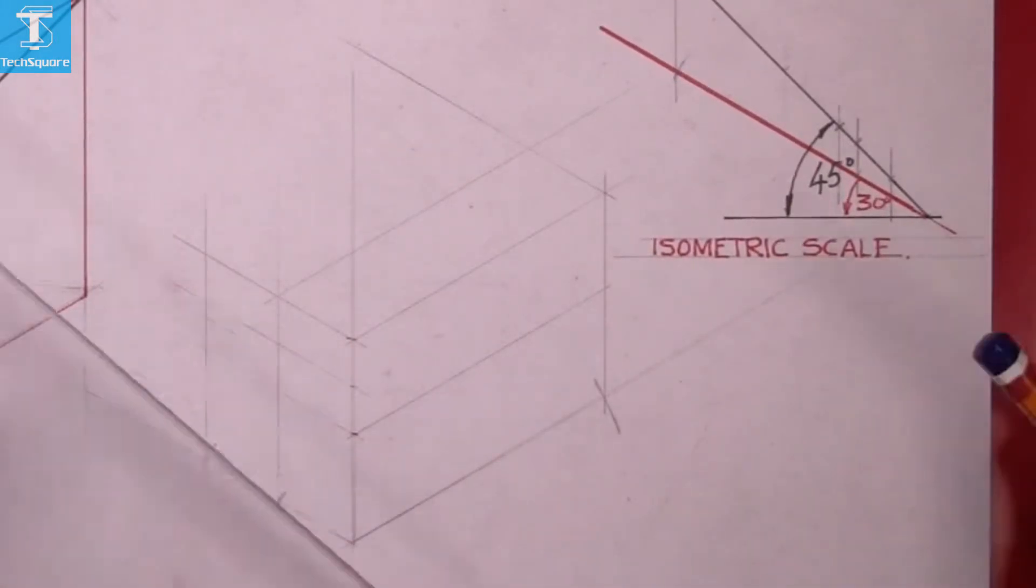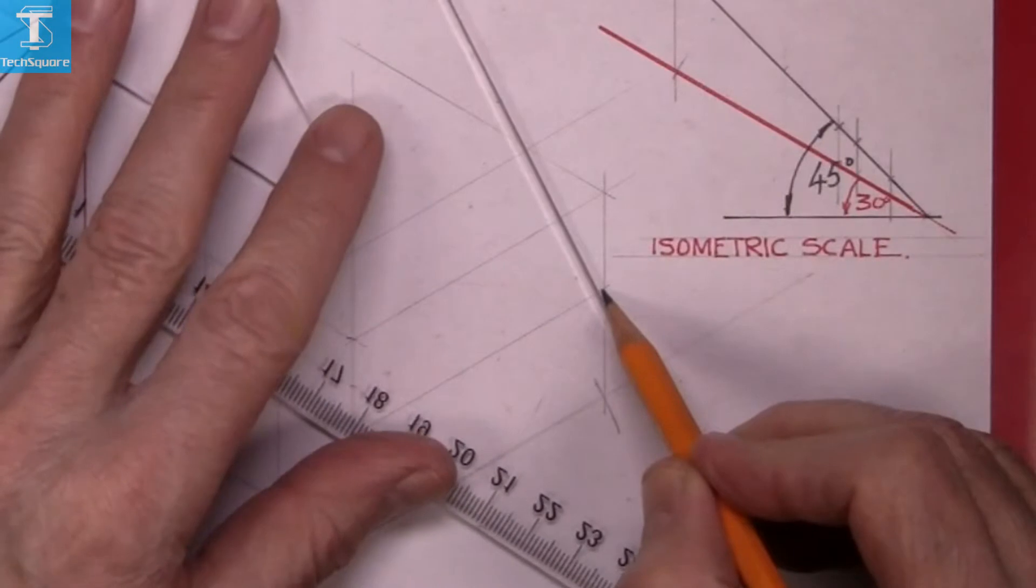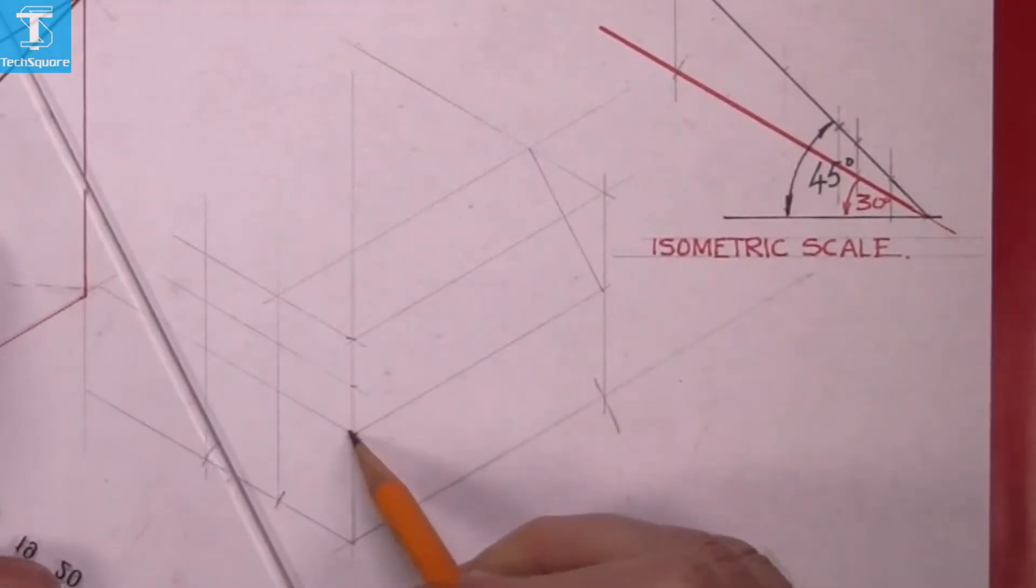Now join a sloping line. Join those two points and the same on this end.